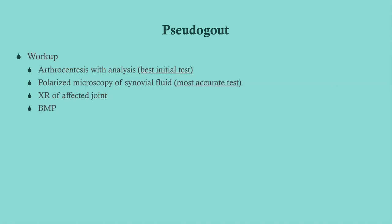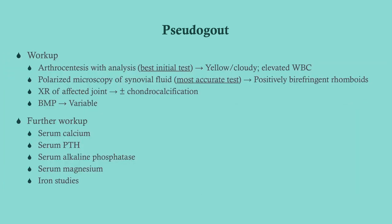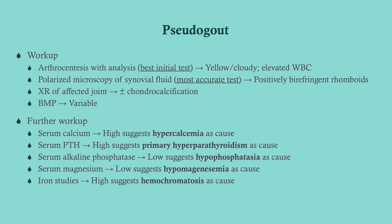The workup for pseudo gout is pretty much the same as gout, except include the BMP because of electrolyte contributions. On polarized microscopy, what you'll see in pseudo gout is positively birefringent, rhomboid-shaped crystals. You may also see chondrocalcification on x-ray. For further workup to find the cause: serum calcium, serum PTH — looking for hyperparathyroidism — serum alkaline phosphatase, serum magnesium, and iron studies looking for hemochromatosis: high serum iron, high ferritin, and low TIBC.